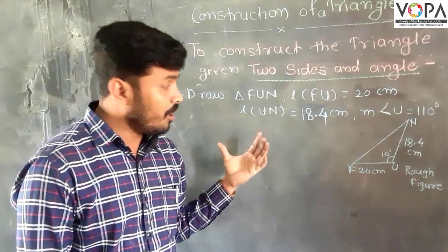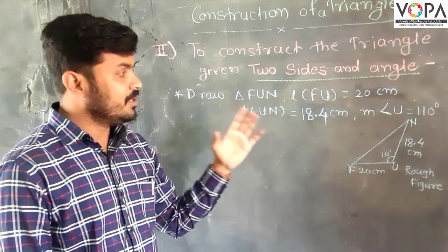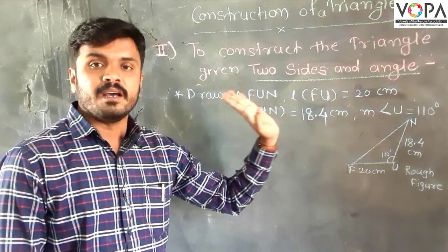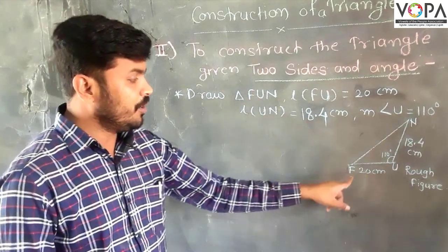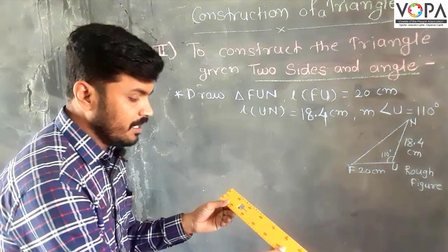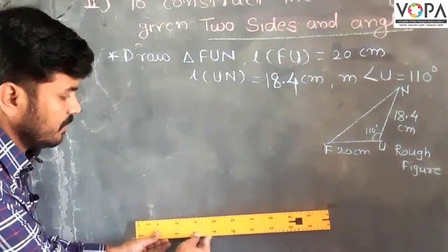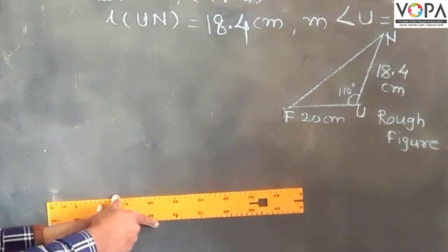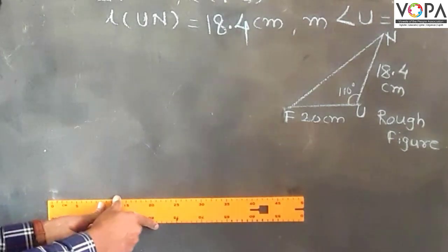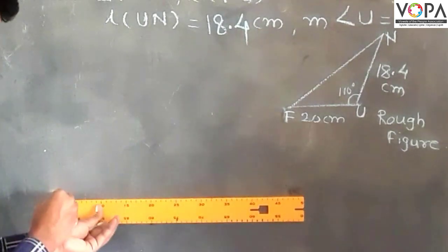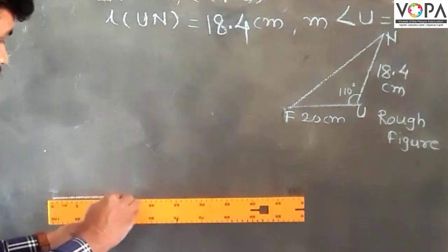Now we draw the main figure with the help of this rough figure. First, we draw FU equal to 20 centimeters. Get the length on the ruler and draw the 20 centimeter segment or side of the triangle. So this is FU.